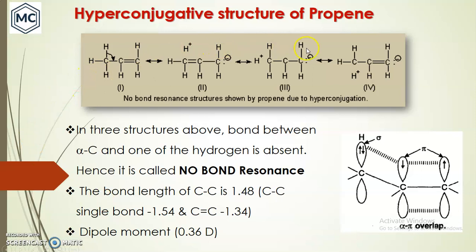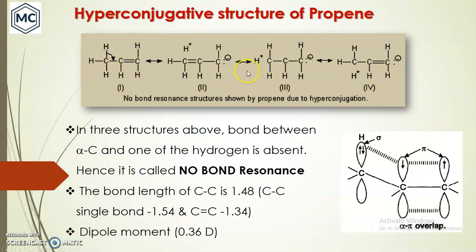This is the hyperconjugative structure of propene. The pi bond can delocalize with the C–H sigma bond. There are four hyperconjugative structures. In each, the H sigma bond transfers its electron to the carbon; H gets a positive charge, the carbon becomes double-bonded, and the other carbon gets a negative charge. All three alpha hydrogen atoms can undergo hyperconjugation. Since there is no H–C bond in the structure, it is called no-bond resonance.